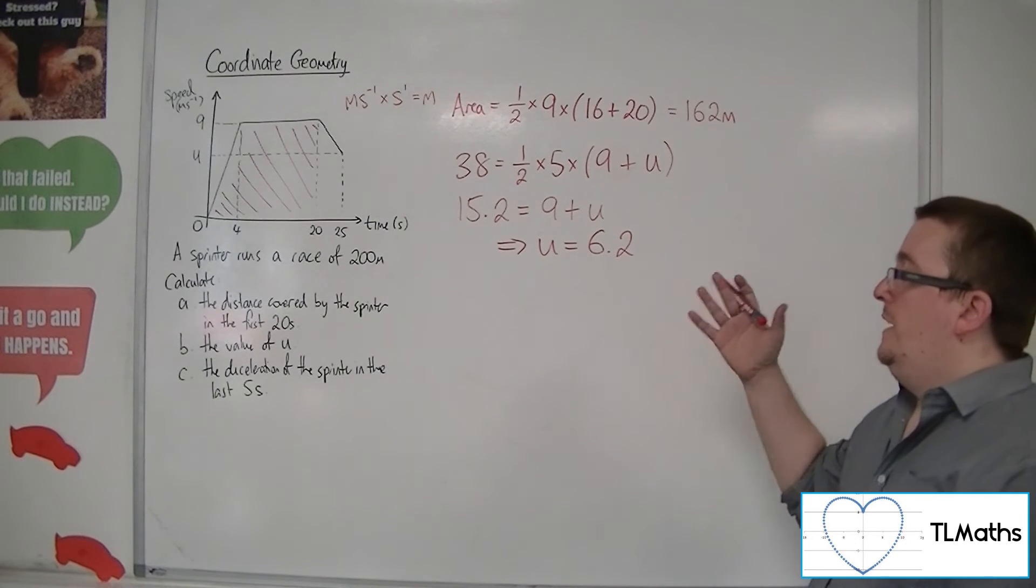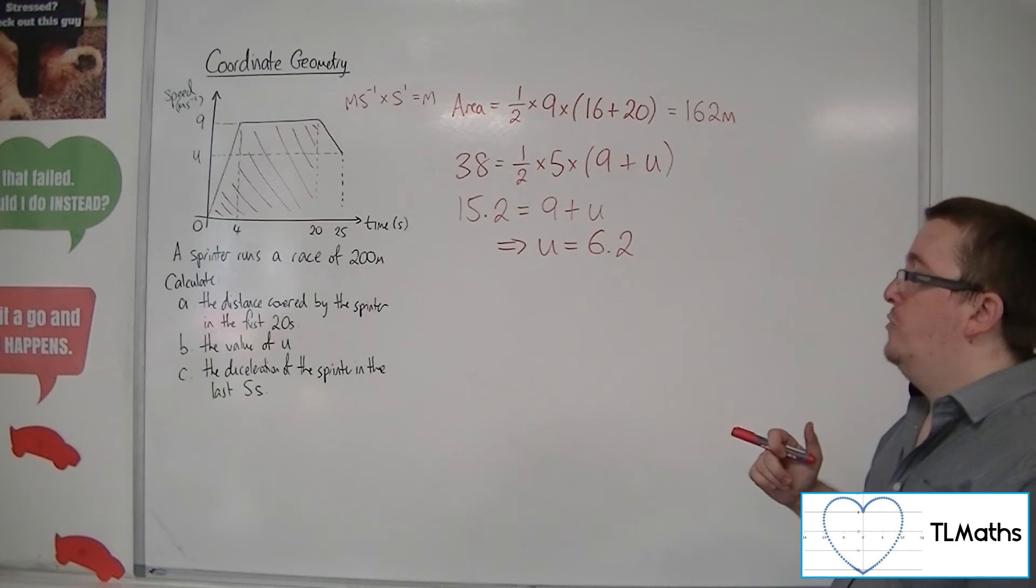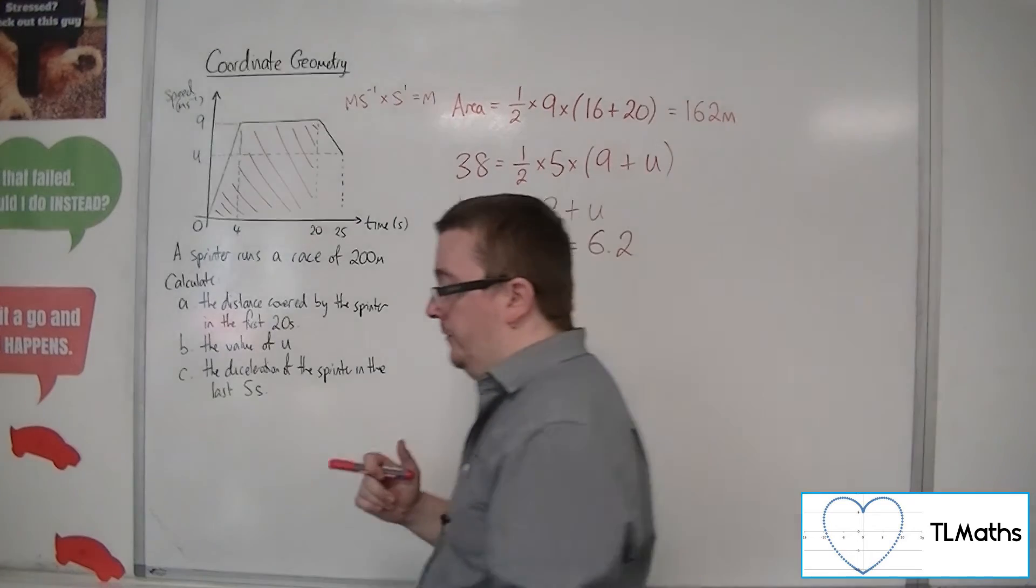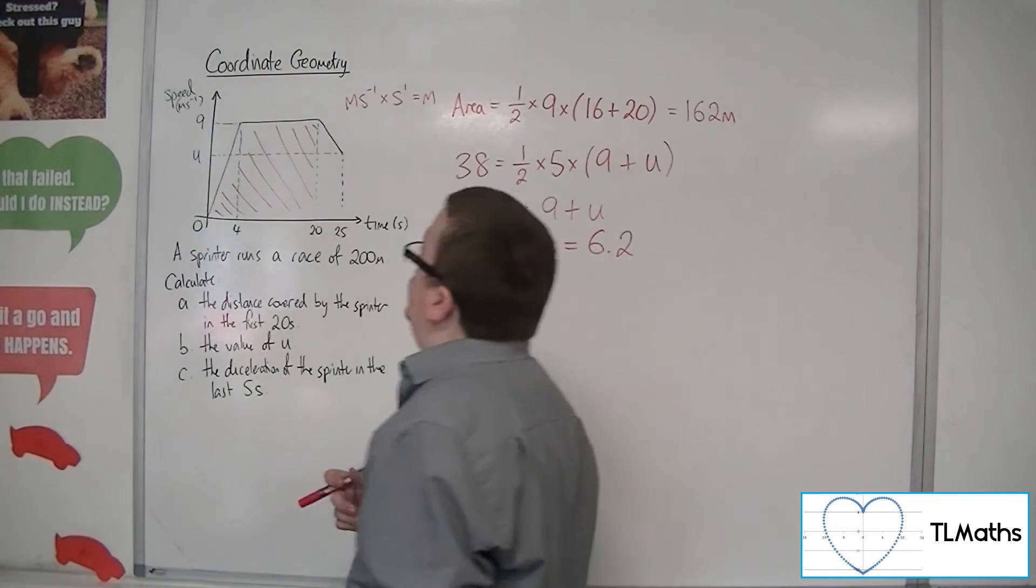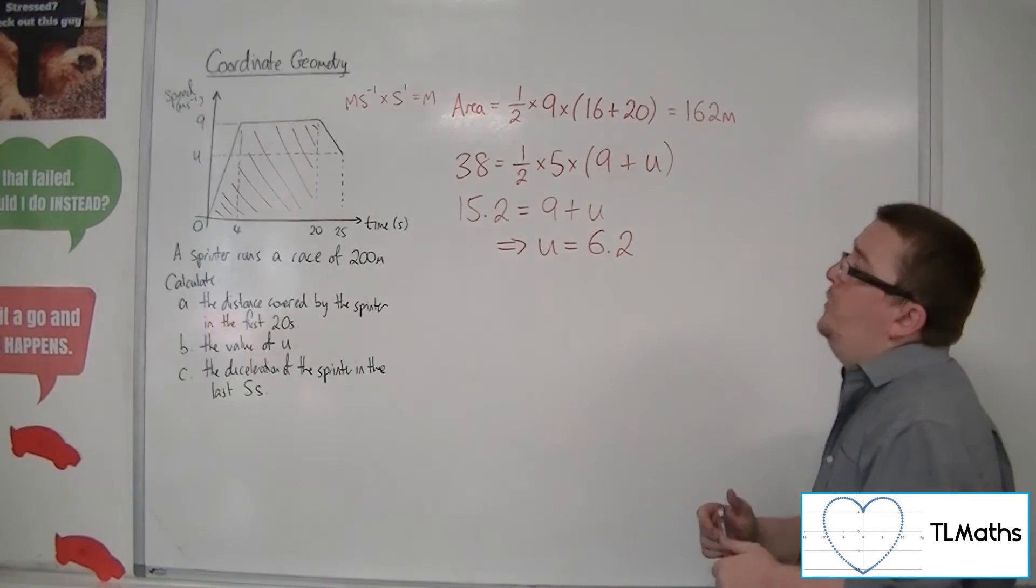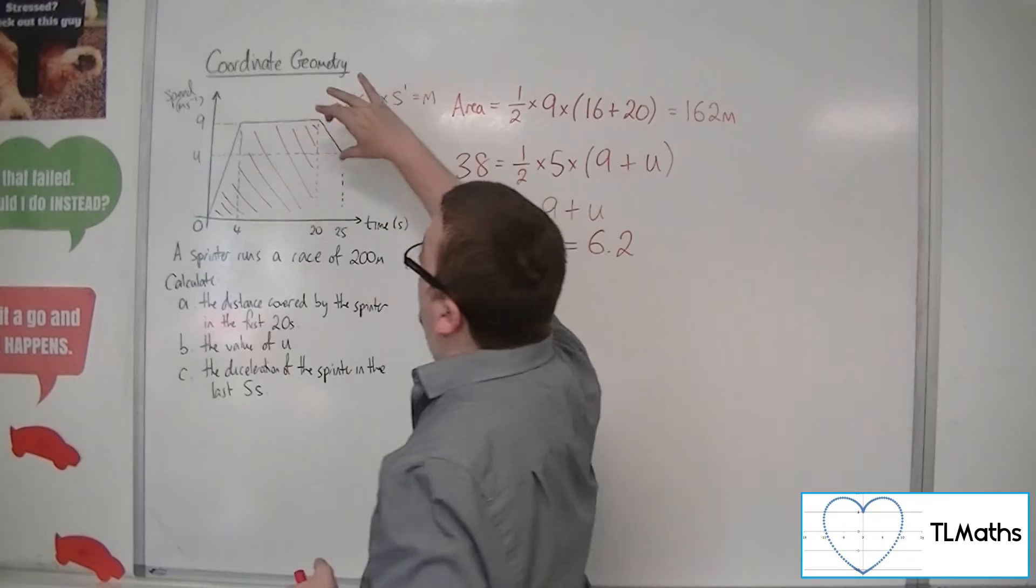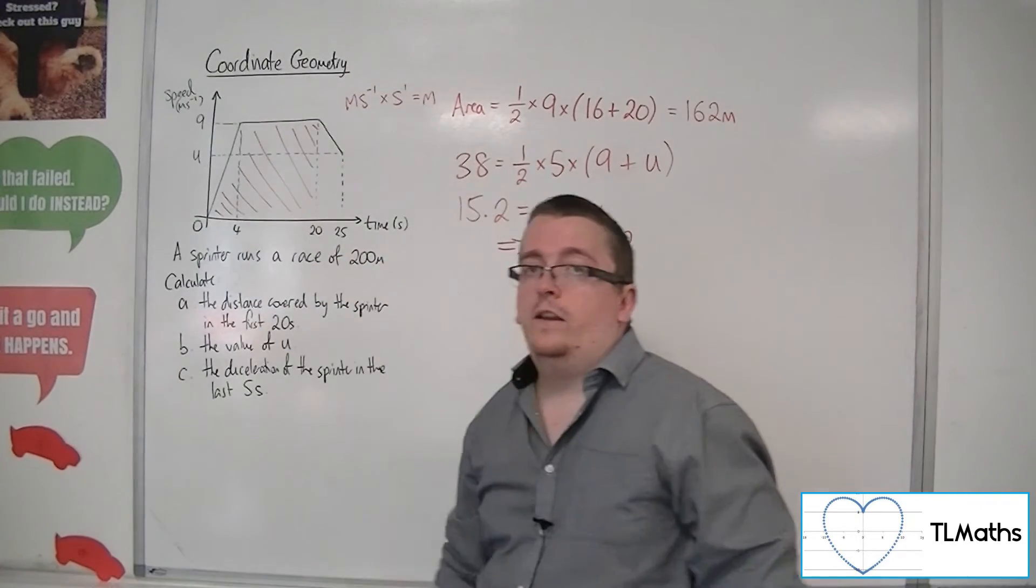And then finally, we need to find the deceleration of the sprinter in the last 5 seconds. Now, the deceleration will be the gradient of that line there, that chord.